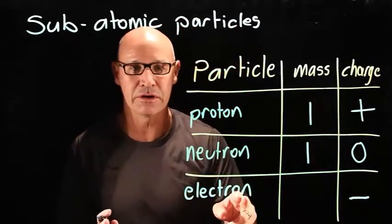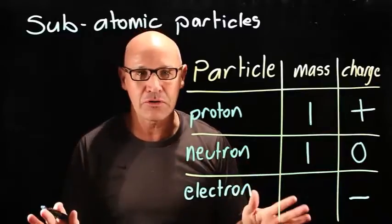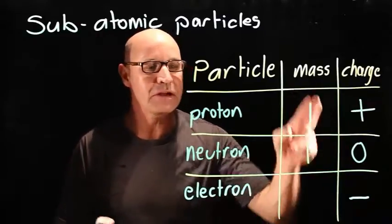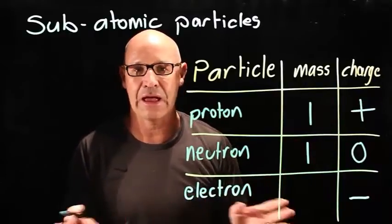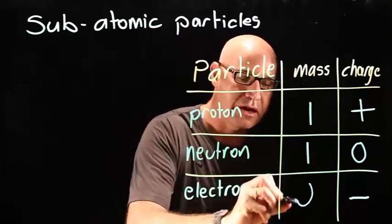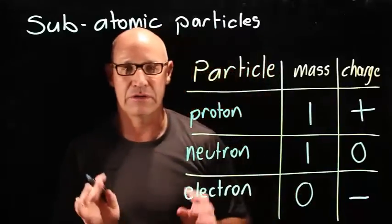An electron is considered so small, so much smaller than protons and neutrons, that we don't count their mass at all. So we can say that it's got zero atomic mass.